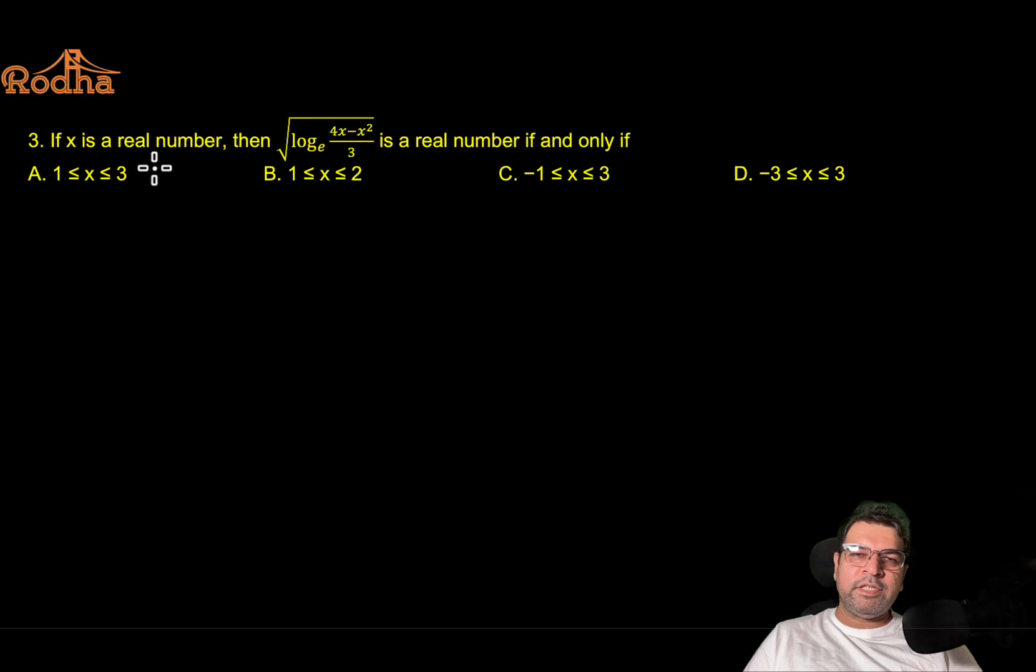Third question, the easiest of the lot. Again, inequalities. You can see if the question is not of theta and you need to find something in terms of inequalities, always try to put the options and values of x. If x is a real number, then this is a real number if and only if - in any way, I need to satisfy this with the inequality. So in a way, I am asking for domain of this function. What values of x will satisfy this?